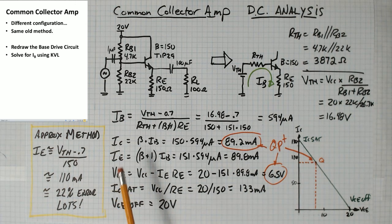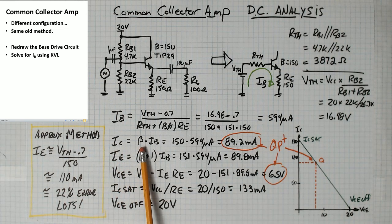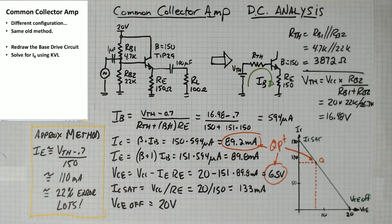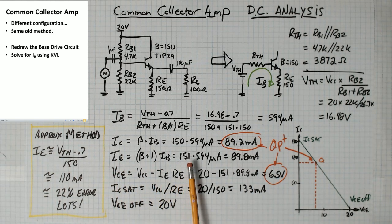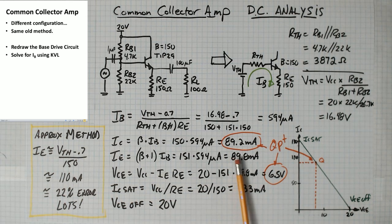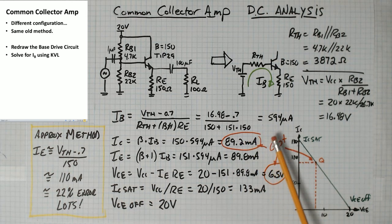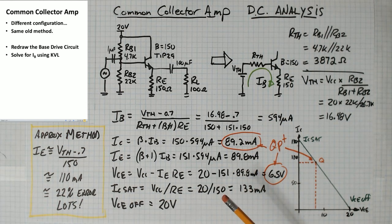Once we've got base current, we can multiply that by beta to get collector current of 89.2 milliamps. And then you can find the emitter current by multiplying it by beta plus 1. 151 times 594 is 89.8 milliamps. You could also add up these two values. 0.6 milliamps plus 89.2 is going to come up to 89.8.